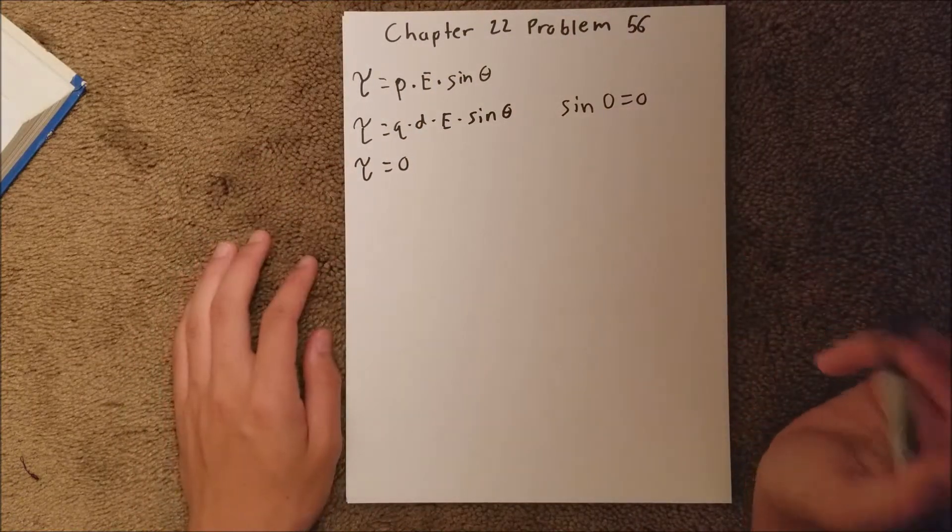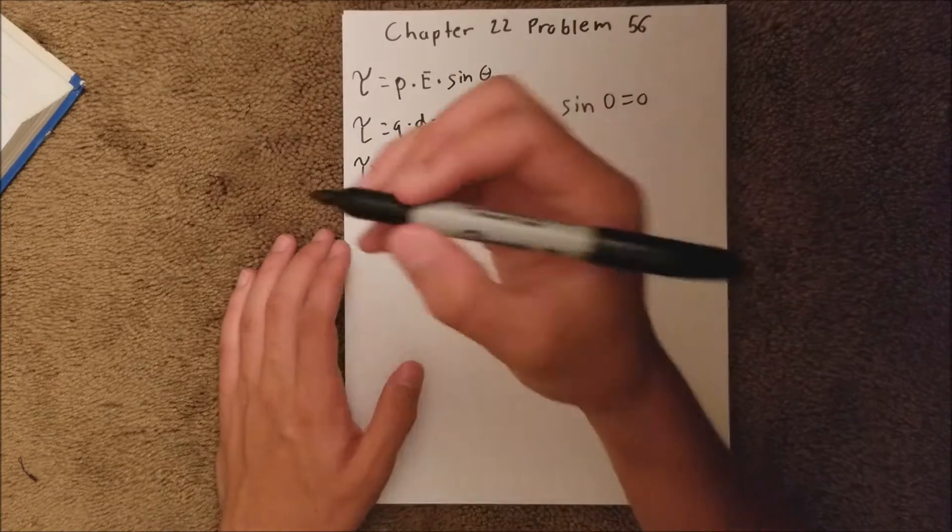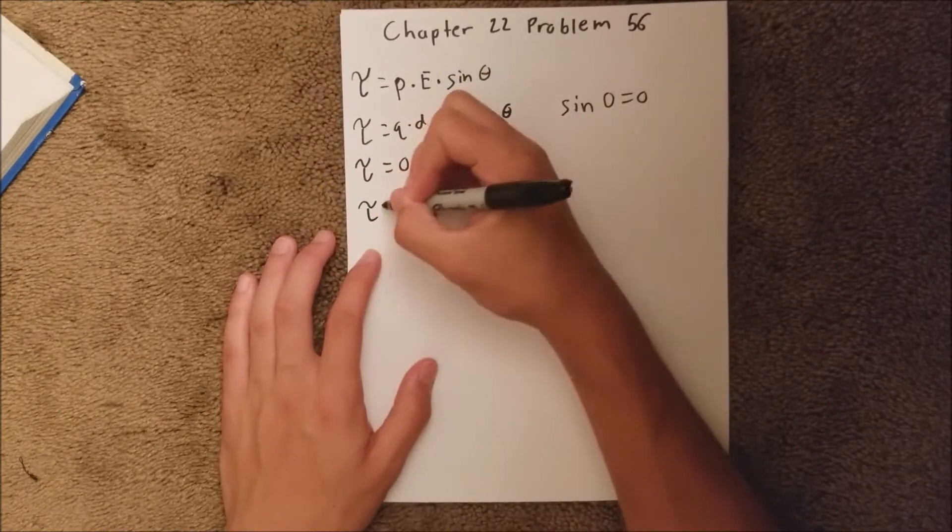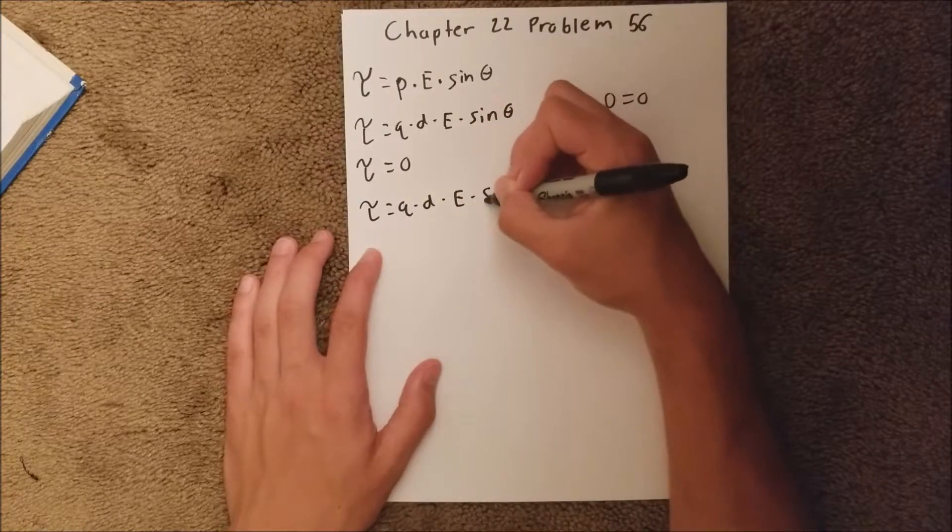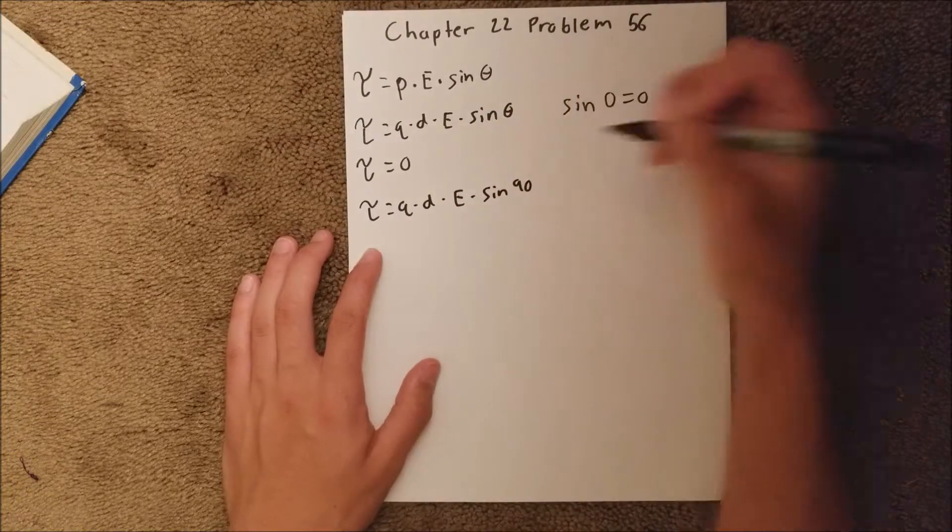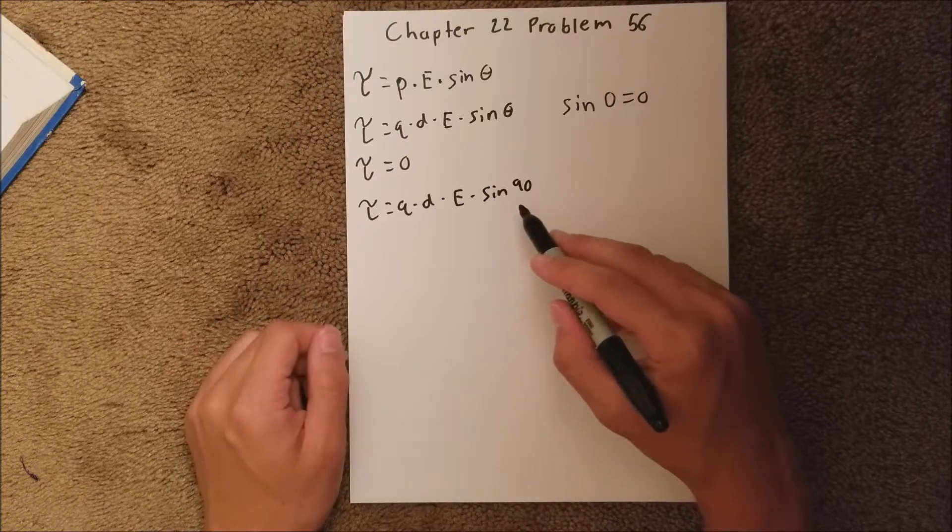Now for part 2, again with this equation, torque equals q times distance times E. This time we're going to have the sine of 90 degrees, which equals 1.